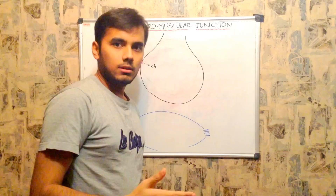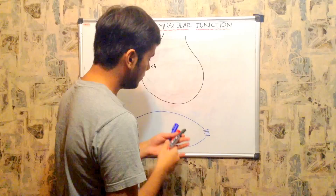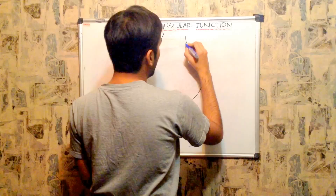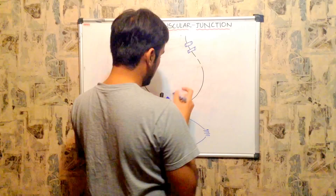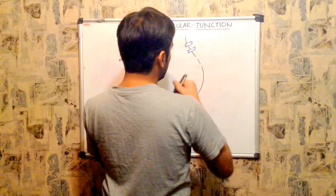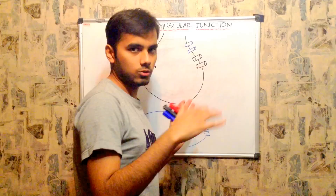On every nerve ending that is innervating skeletal muscles or smooth muscles, there are sodium channels as well as calcium channels. The blue ones are the sodium channels and the black ones are the calcium channels. On every axonal nerve ending you find these channels.